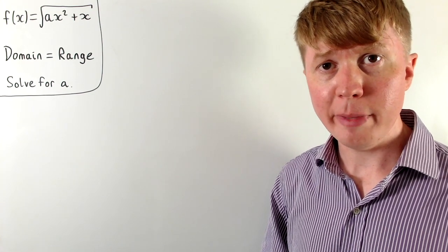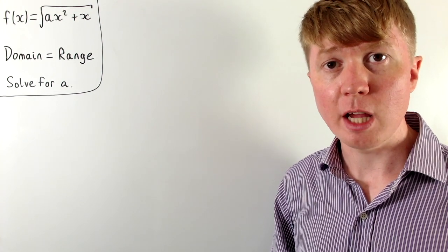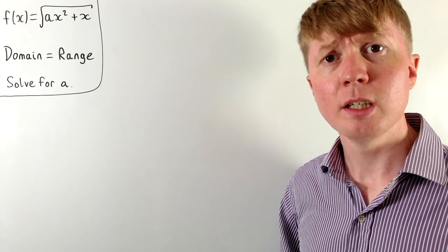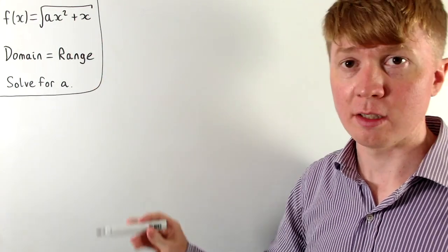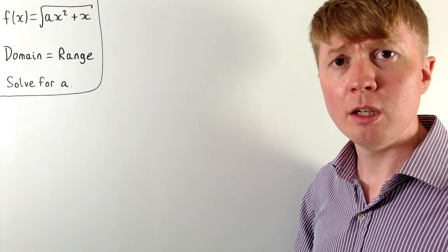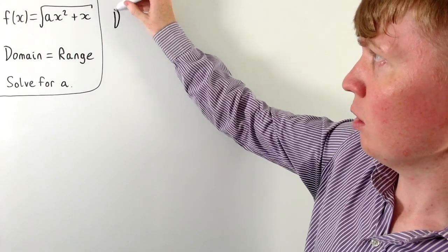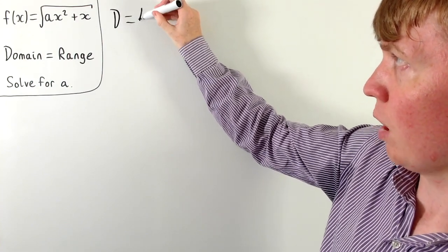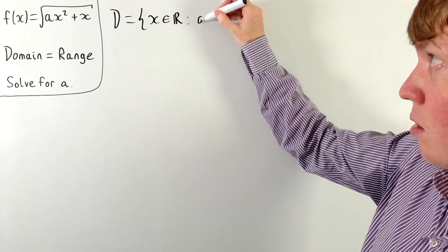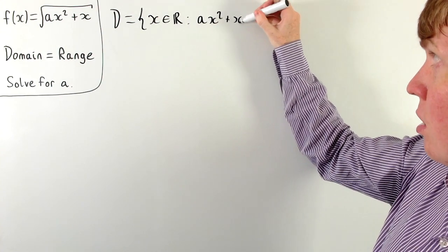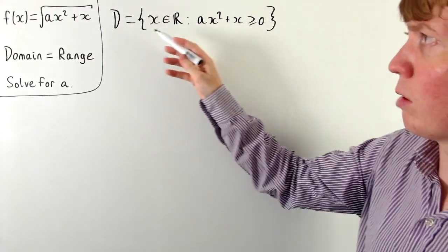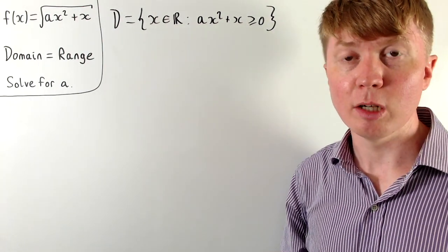When we talk about the domain of our function, we mean the set of possible inputs — possible values of x — so that f(x) is well defined, considering it as a function from the reals to the reals. So the domain, thinking about the square root of ax² + x, is all real values of x such that ax² + x is greater than or equal to zero.